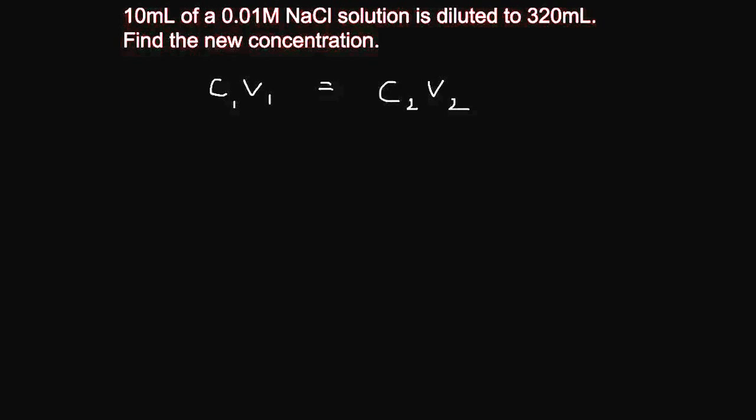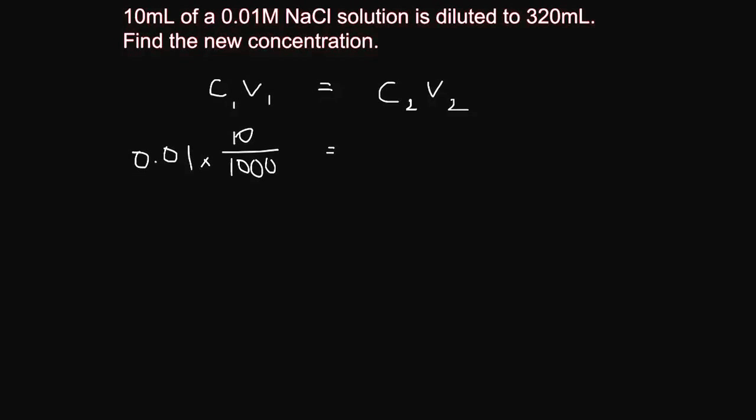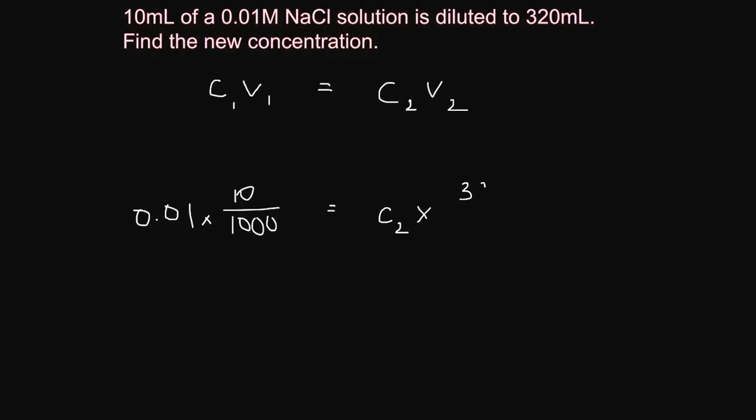So, let's put some numbers in. My C1, the concentration I started with was 0.01 molar. So, we have 0.01 times 10 mL is 10 on 1000 because remember it's got to be in litres. And that equals, let me just move this down so I can make some room. So, that will equal whatever my new concentration is times my, the volume I dilute it to. So, that'll be 320 on 1000.